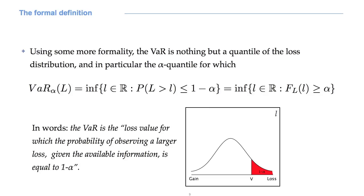Using some more formality, the value at risk is nothing but a quantile of the loss distribution, and in particular the alpha quantile, for which the probability of observing a larger loss, given the available information, is equal to 1 minus alpha.